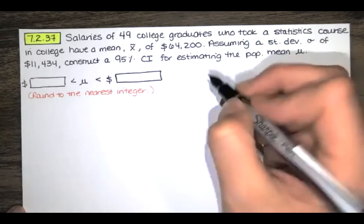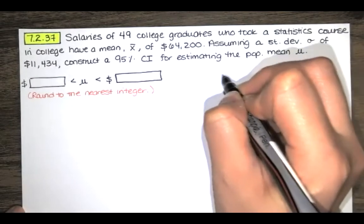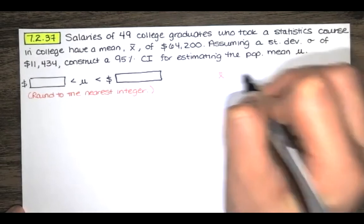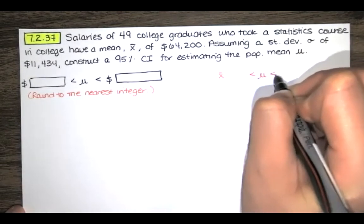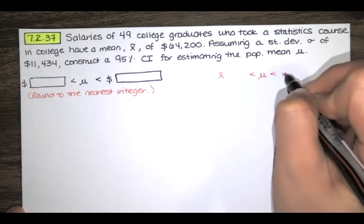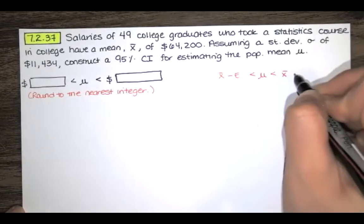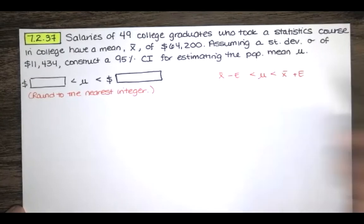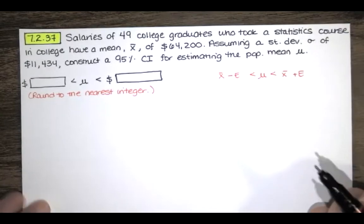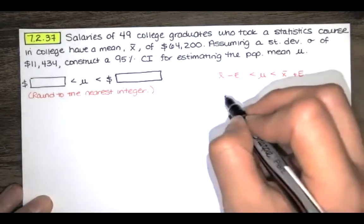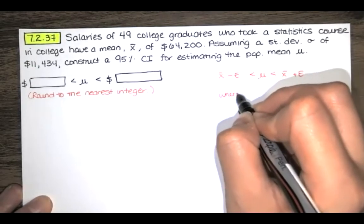In this case, this is the way we construct the confidence interval. Our true population mean mu is still in between X bar minus the error and X bar plus the error, where X bar is that sample mean.